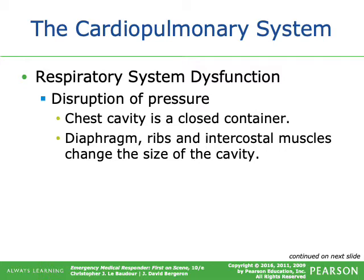Disruption of pressure: the chest cavity is a closed container. The diaphragm, ribs, and intercostal muscles change the size of the cavity. The diaphragm is the main muscle of respiration — it moves up and down across the bottom of the chest cavity to increase its size. The intercostal muscles, located between and outside the ribs, are more of an accessory muscle used during labored breathing or increased respirations.